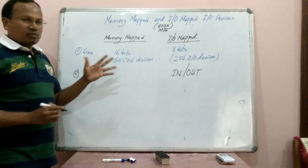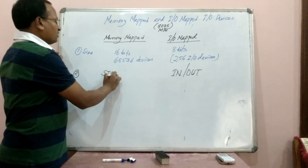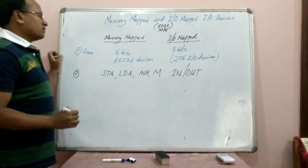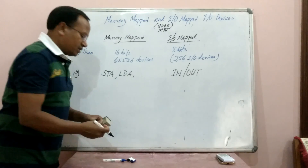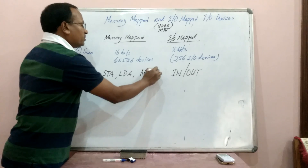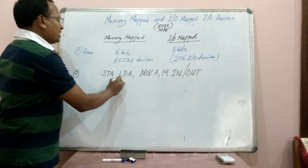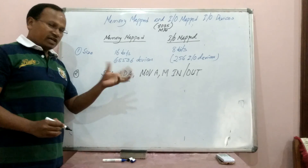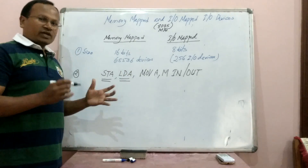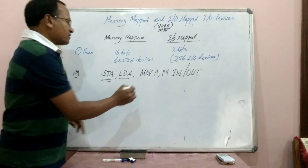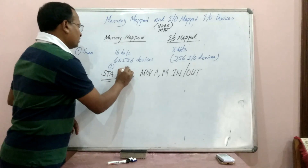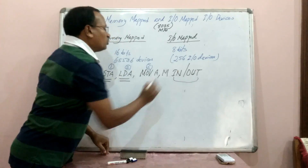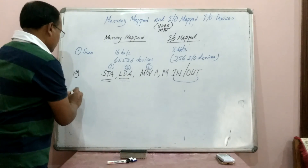Whereas, under memory-mapped IO devices, there are several instructions: MOV M,A, LDA, and STA. In LDA and STA, we use a 16-bit memory address — the device is located at a 16-bit memory address. All of these — MOV M,A, LDA, STA, and many others — are examples of memory-mapped IO. Whereas IN and OUT are the examples under IO-mapped IO devices.